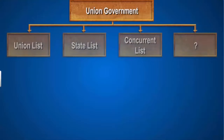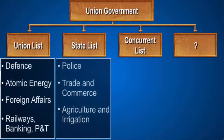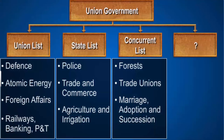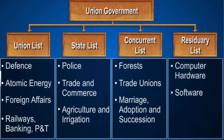Some subjects that do not fall under any of the three lists, or came up after the constitution was made, are known as residuary subjects. The union government has the power to make laws on these residuary subjects — for example, computer hardware and software.